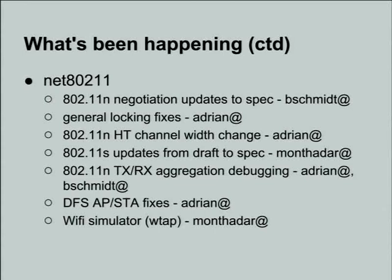Previous D9 should correctly support being told by the access point - in station mode - to change channel, and then correctly handle all the weird corner cases that occur there, such as being told to change to a DFS channel where the access point has to stay quiet for a minute. The corner case was if it doesn't hear an initial beacon, it never determines that there's nothing on the channel and it sits there patiently waiting. So now it will correctly go to that channel, determine there's no access point there, and start roaming for a new access point with the same SSID.